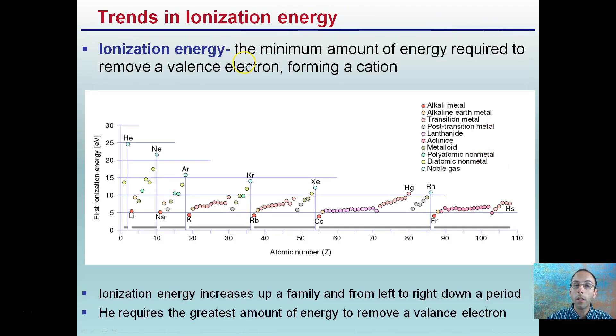Ionization energy, that is basically the minimum amount of energy required to remove a valence electron from a cation. Cations are positive ions. Ionization energy increases up a family and from left to right down a period. Helium requires the greatest amount of energy to remove a valence electron. We see that here, the greatest amount of energy.